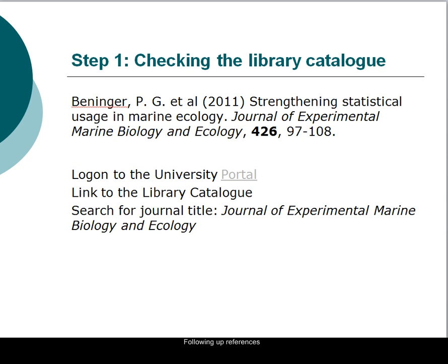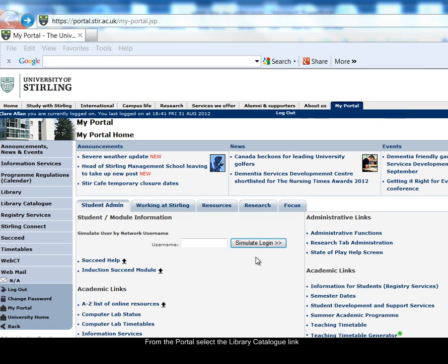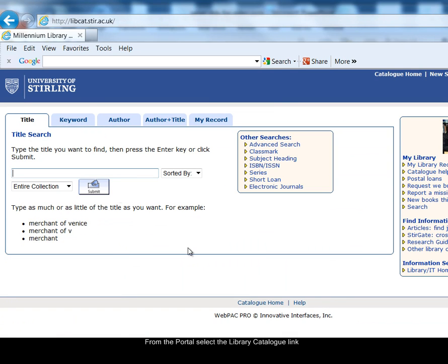The first step is to check the library catalogue. For an article reference like this, you would check the library catalogue for the title of the journal. The catalogue lists the titles of journals and books, not the article titles. To access the library catalogue, you would first log on to the University Portal, and then search for the journal title. In the University Portal, select the link to the library catalogue on the left-hand side.